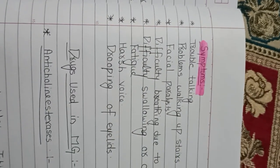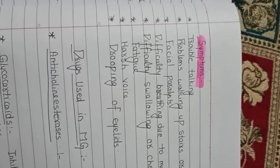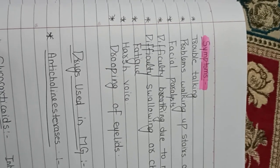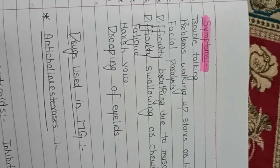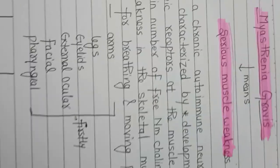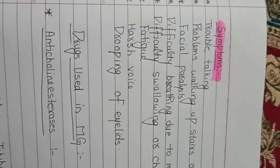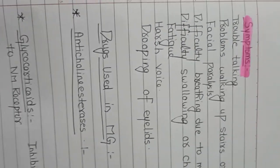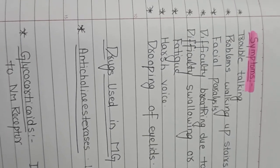We also experience fatigue, because the legs are involved. There is a harsh voice. There is also drooping of eyelids, because your eyelids are involved. So these are the symptoms we can observe in myasthenia gravis.